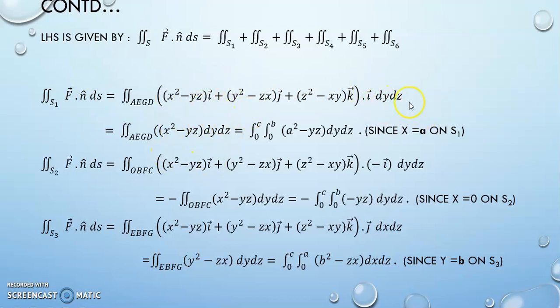Take that. There you have the order as dy dz, integrated over 0 to c, 0 to b, you get an answer. Likewise, you do it for surface 2 and surface S3. For S3, you have to take j vector. The j vector term alone will be existing.